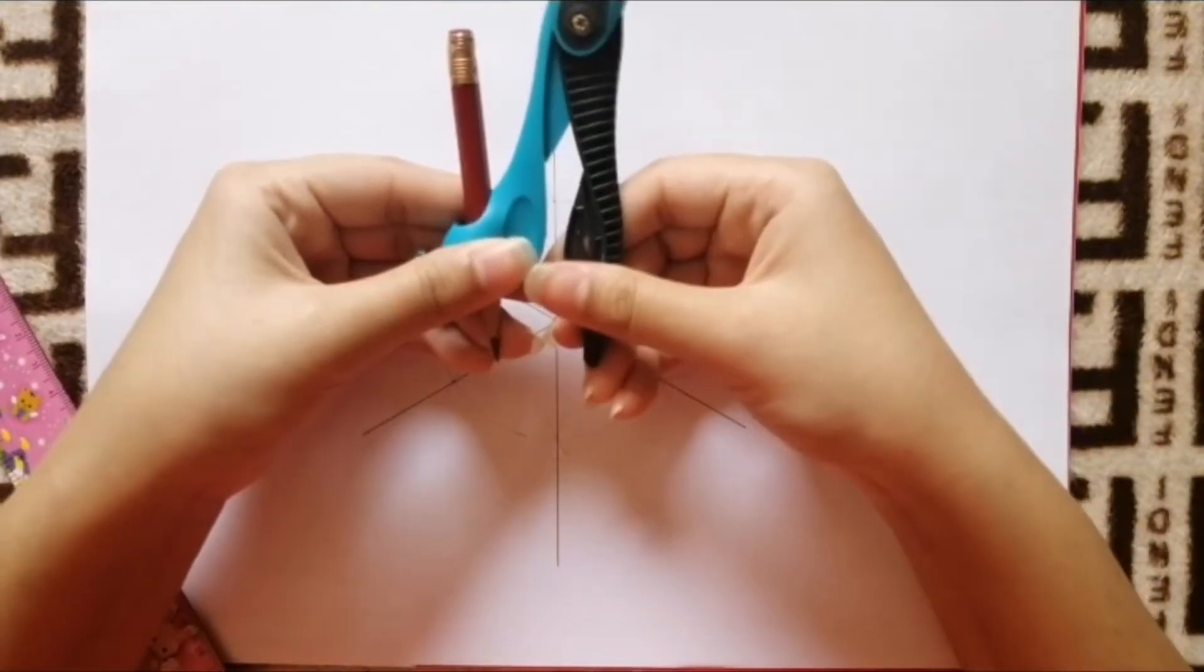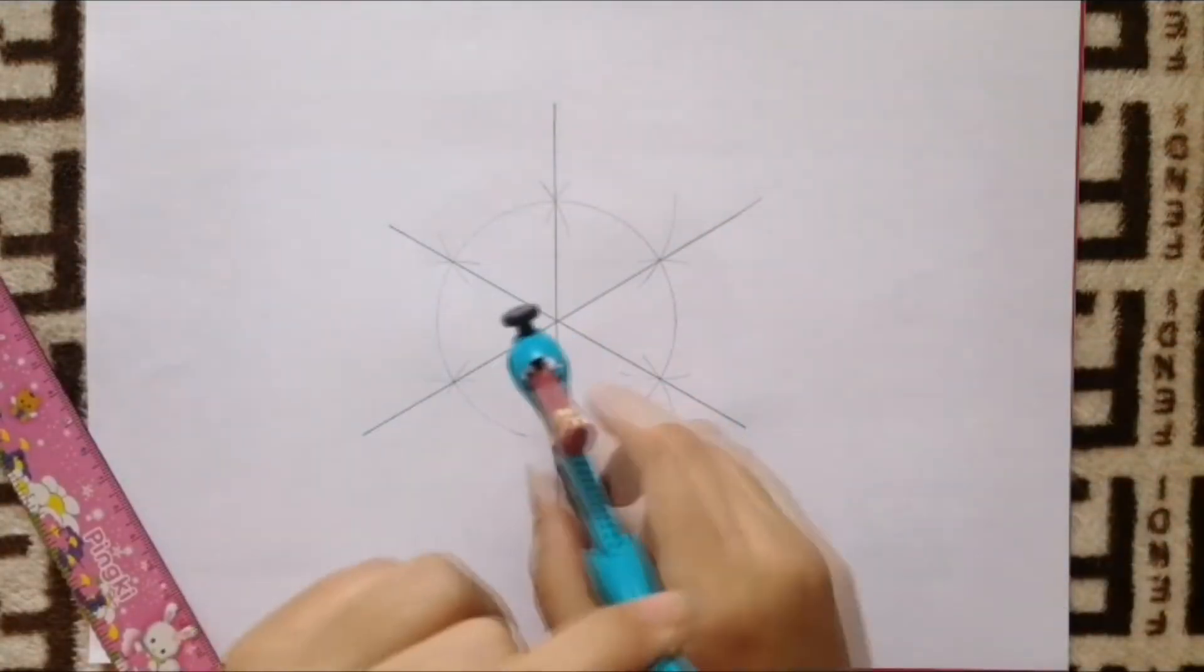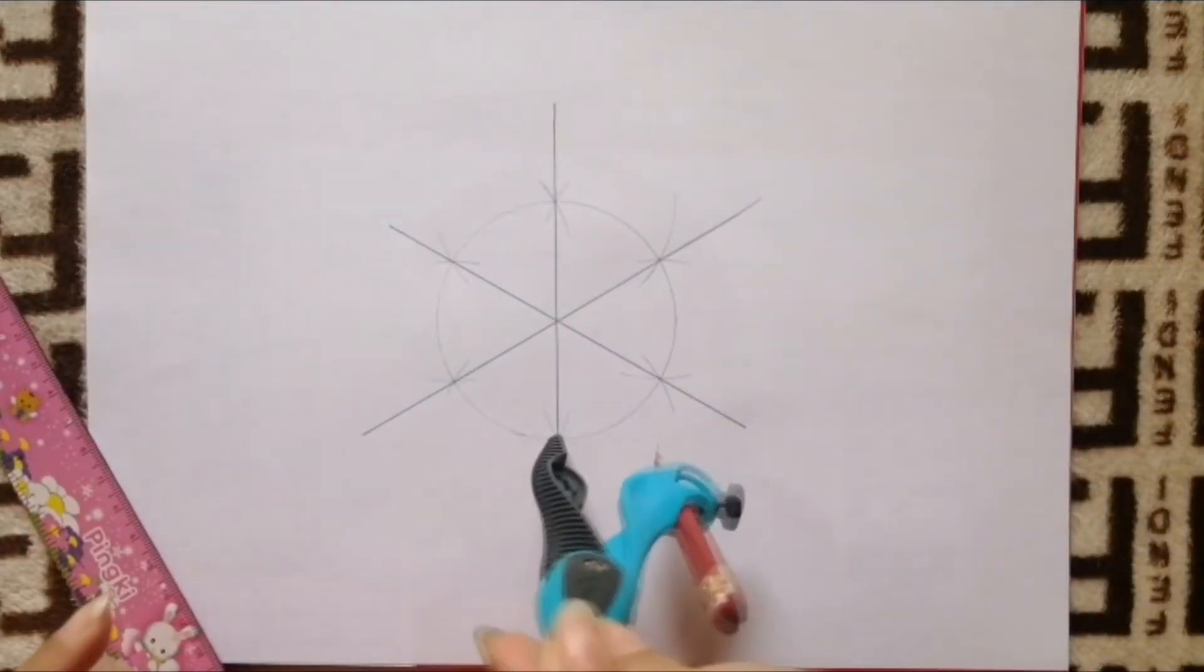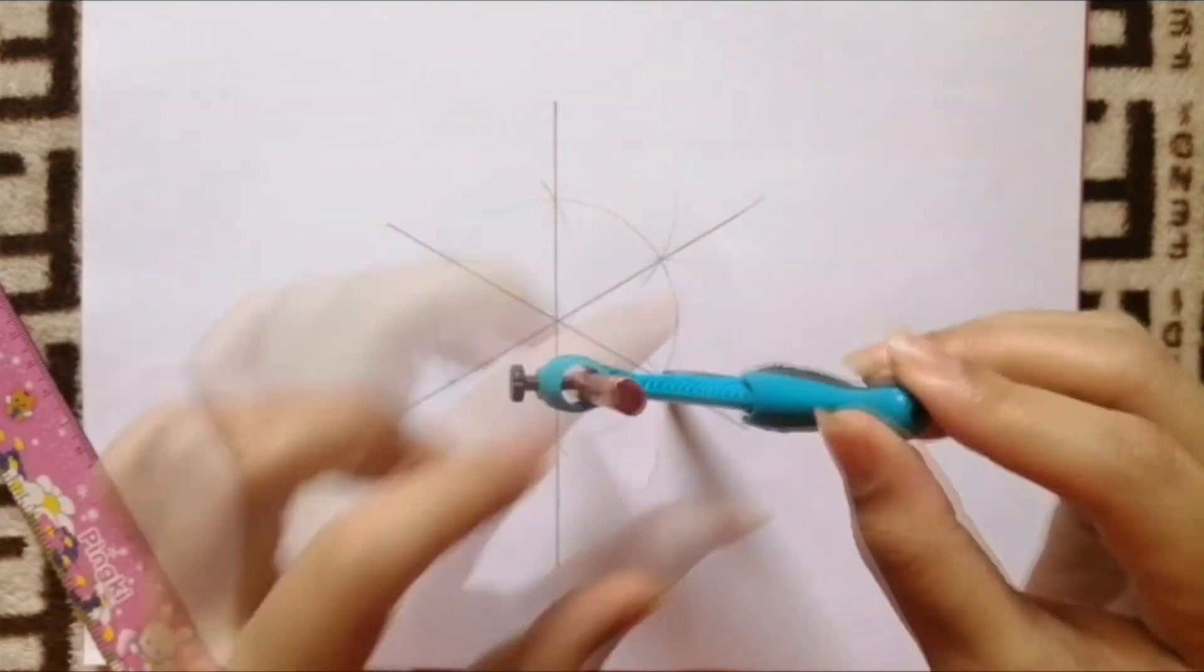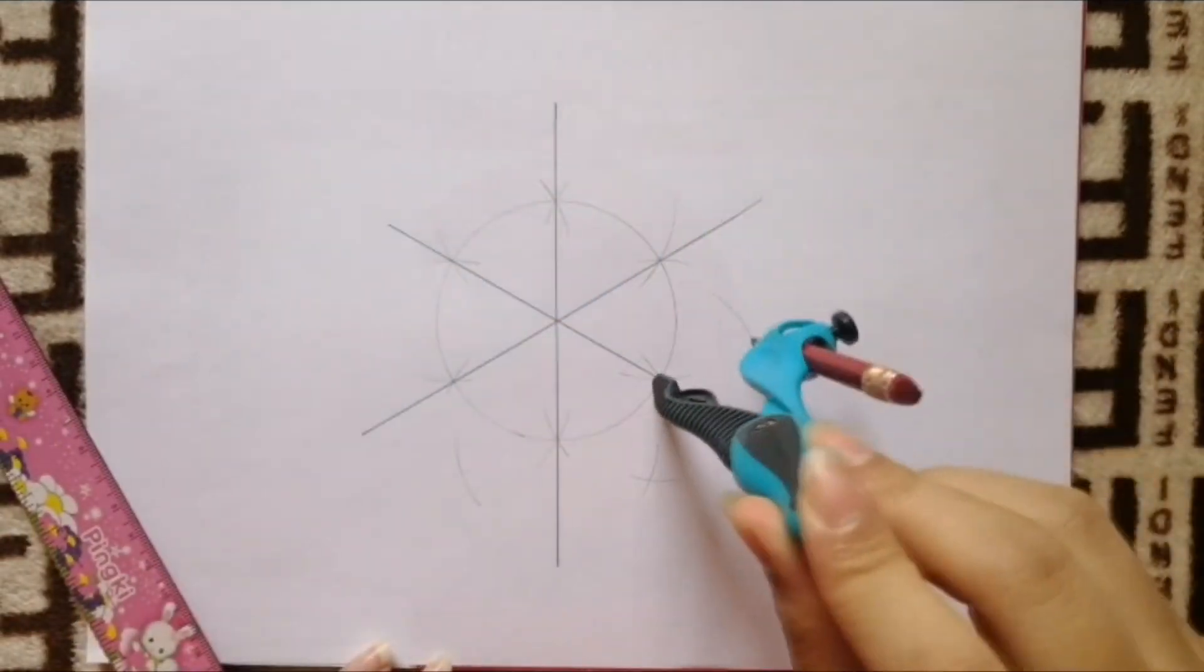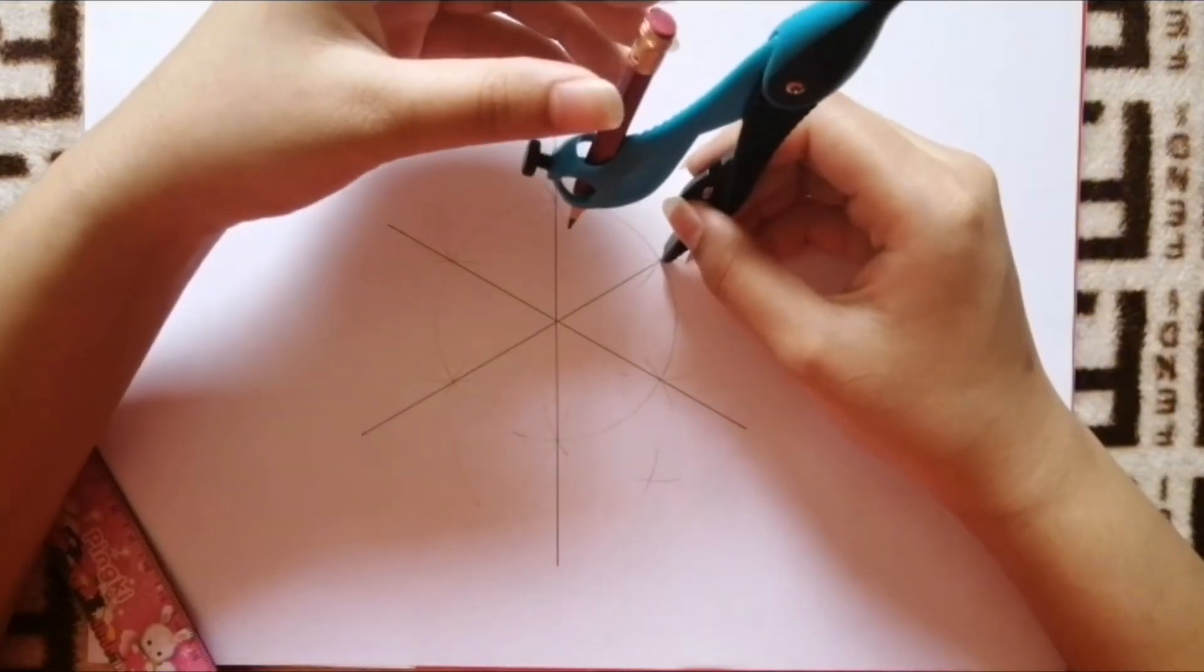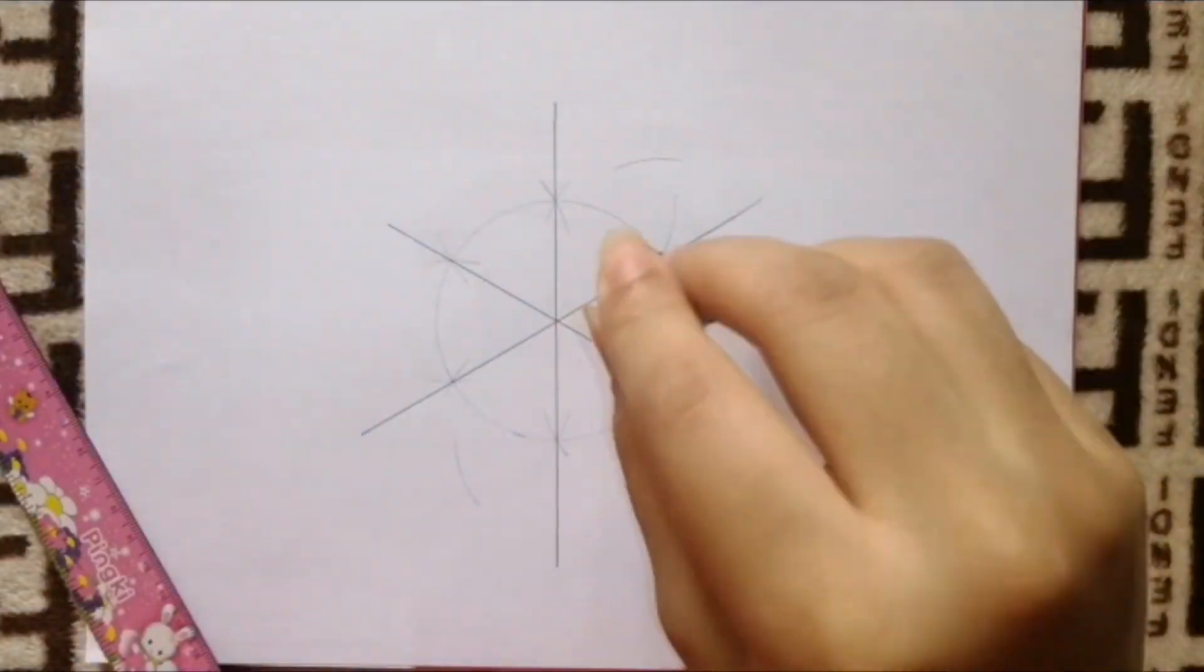Now take your compass, reduce the length a little bit, and again from the exact previous points, cut two arcs on both sides. But this time on the outside of the circle. Continue doing this until you get six cross shapes again like before.